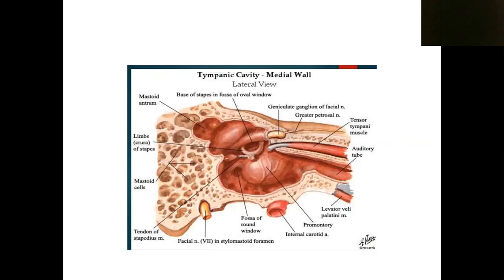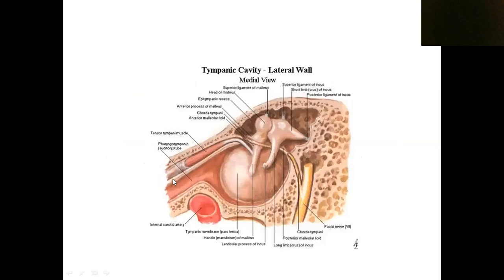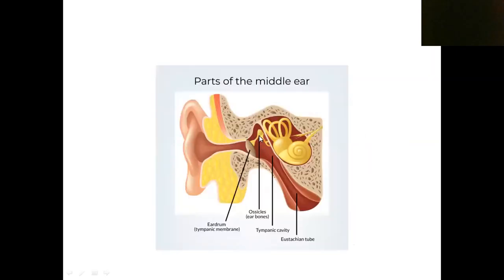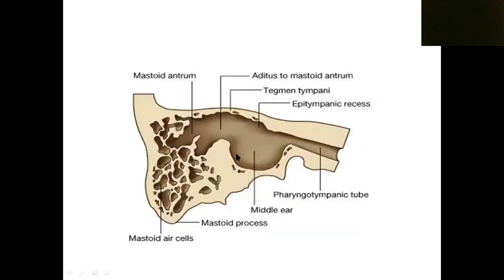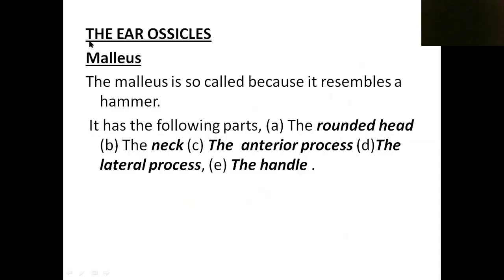So these are the features of the walls: anterior wall, posterior wall, medial wall, lateral wall, roof, and floor — all six walls are clear. Now inside the middle ear, we are going to see the contents. The middle ear contains three ossicles: the malleus, incus, and stapes. These three bones are connected by two joints, and there are also two muscles inside.